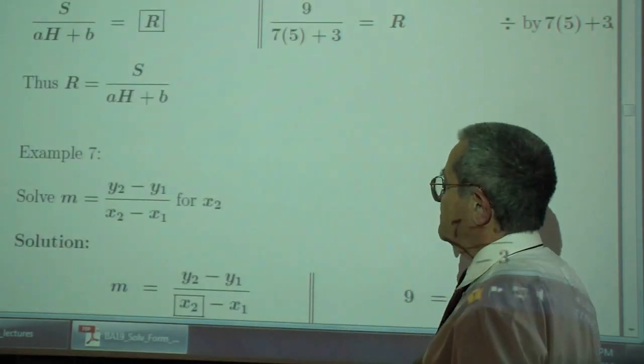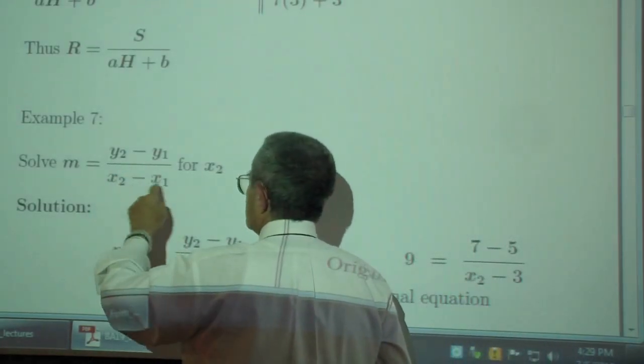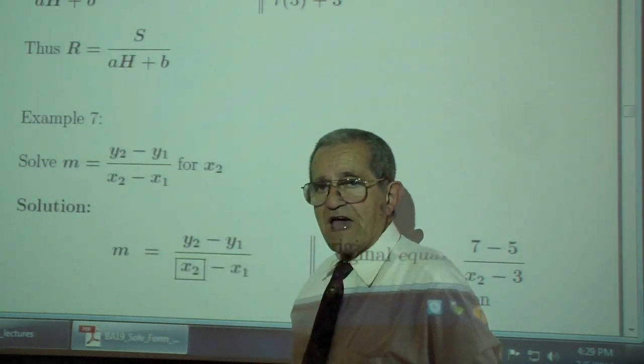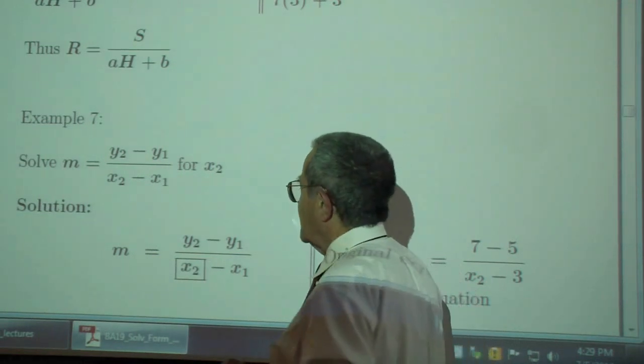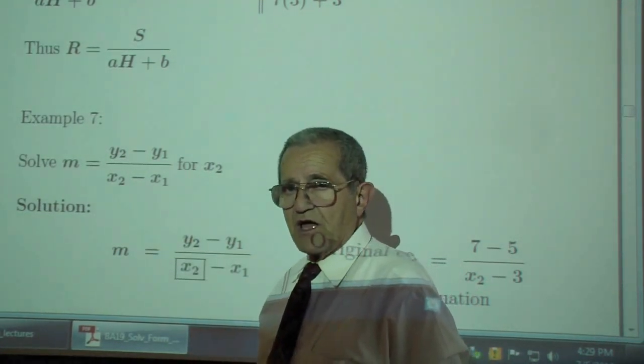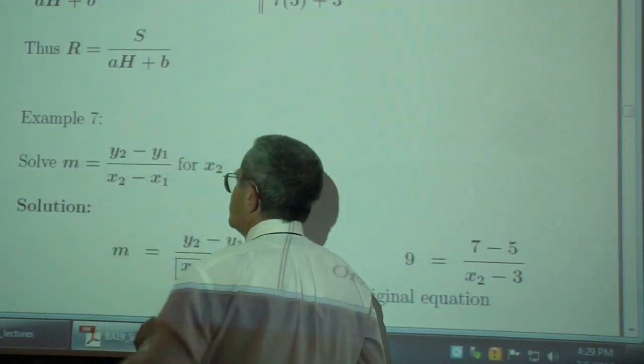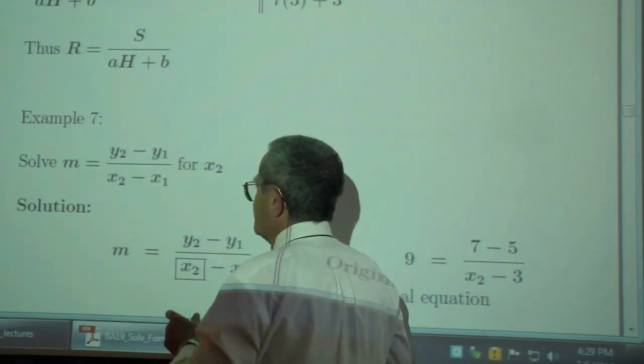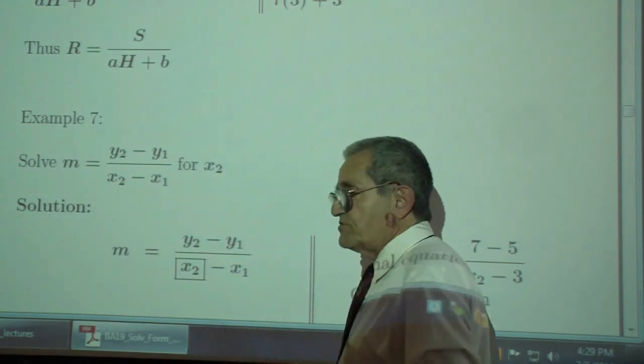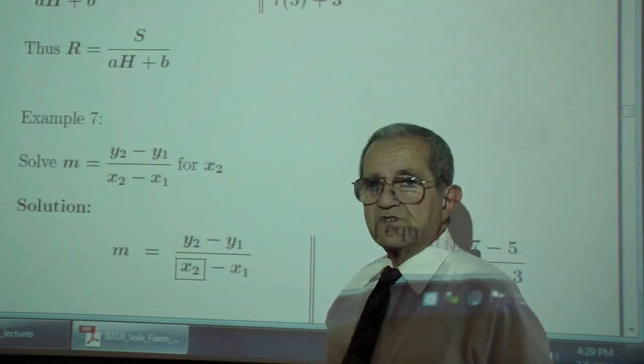Example 7. Solve m, which is y sub 2 minus y sub 1 over x sub 2 minus x sub 1. Now, do the subscripts bother you? I know if I have x to the power 2, that's x times x, that's x squared. But as a subscript, 2 and 1 have no meaning, except to make the numbers distinguish between this x and that x. How many Xs can you have? As many as you need.